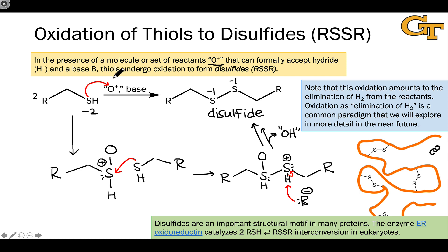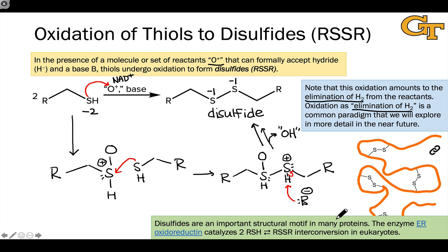In biochemical systems, this O+ could be something like NAD+ or NADP+. What we've essentially done is eliminated H2 from the reactants — removing a proton and a hydride from the original thiols. This oxidation as an elimination of H2 from a substrate is a general paradigm we'll find in oxidation reactions throughout the course. The resulting disulfides are important structural motifs in many proteins, as they can link cysteine residues, and the covalent bonds formed create a rigid link between different parts of a protein chain. There are enzymes that catalyze the formation of these linkages in other proteins.